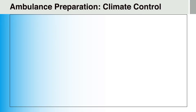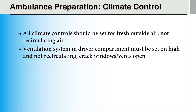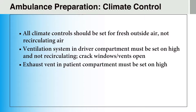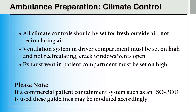The final component of specialized ambulance preparation is climate control. All climate controls should be set for fresh outside air, not recirculating air. The ventilation system in the driver compartment should be set on high and for fresh outside air. All vents should be open and the exhaust vent in the patient compartment should also be set on high. Please note, if a commercial patient containment system is used, these guidelines may be modified accordingly.